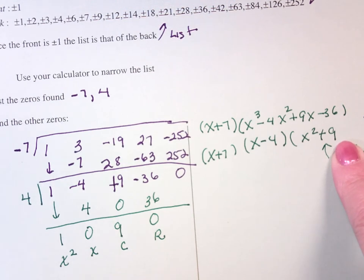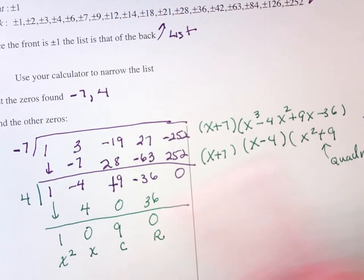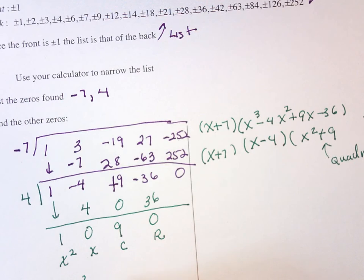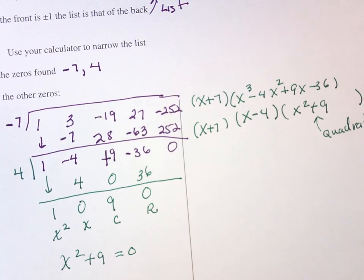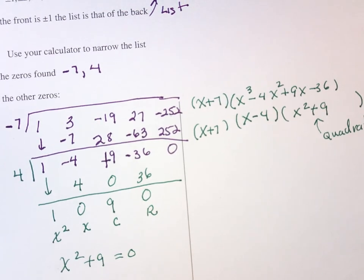Now, why would I like this so much? Because X squared plus 9, if I set that equal to zero, I don't have to use a quadratic formula on it. What could I use on it? I can't factor it. It begins with an S. Square root property, right?